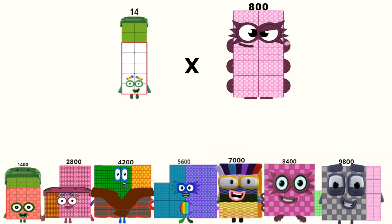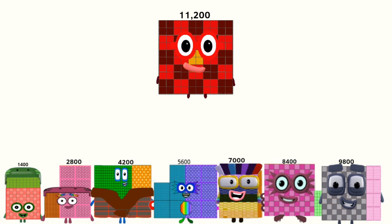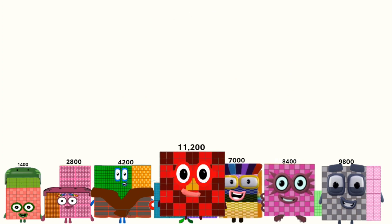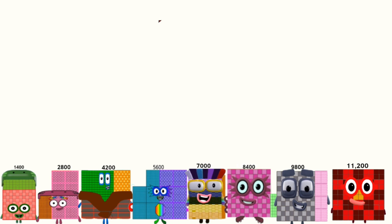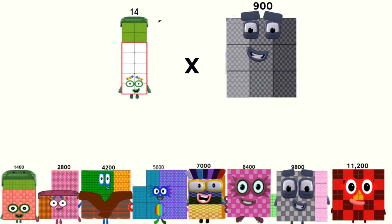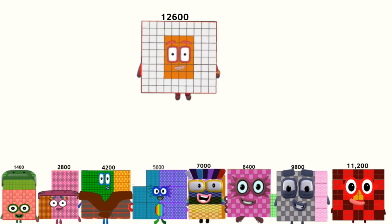14 times 800 equals 11,200. 14 times 900 equals 12,600.